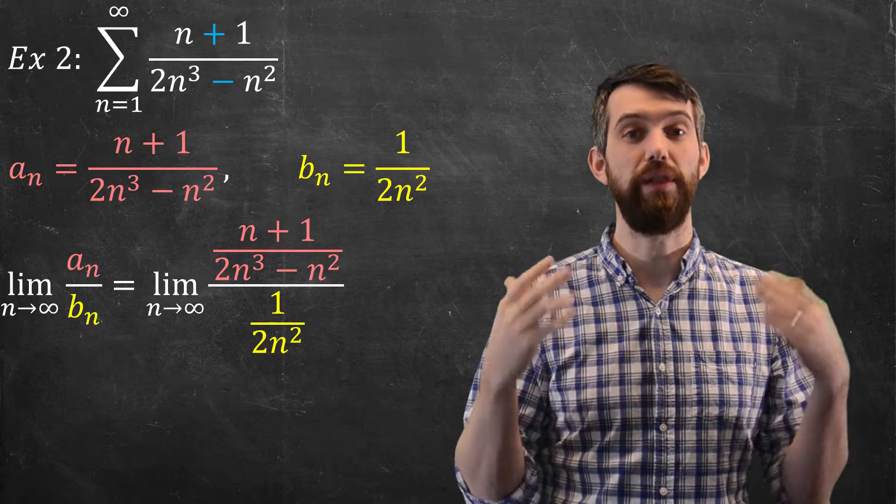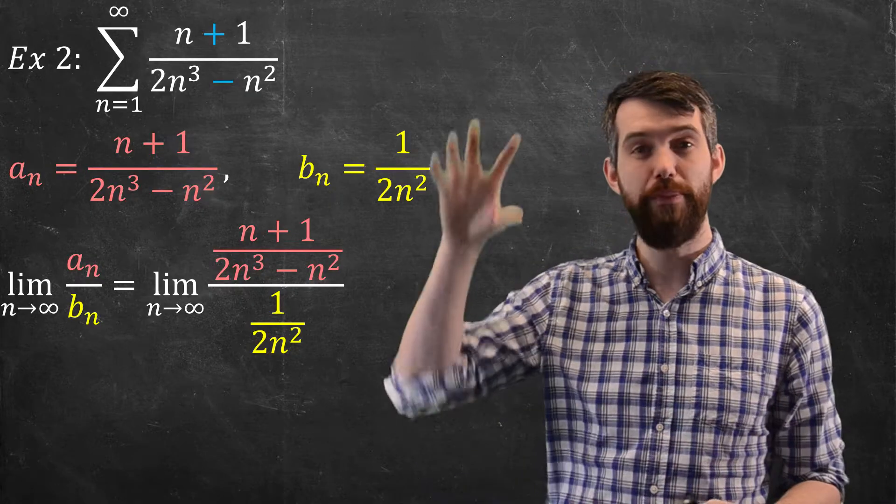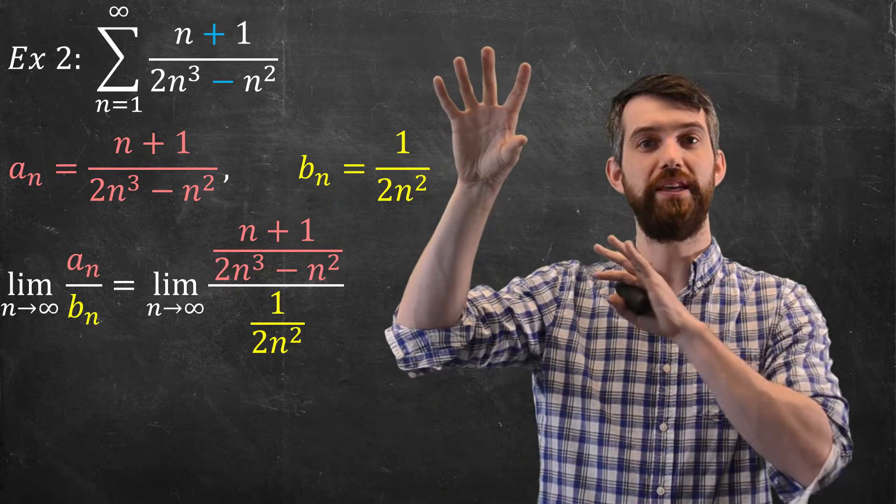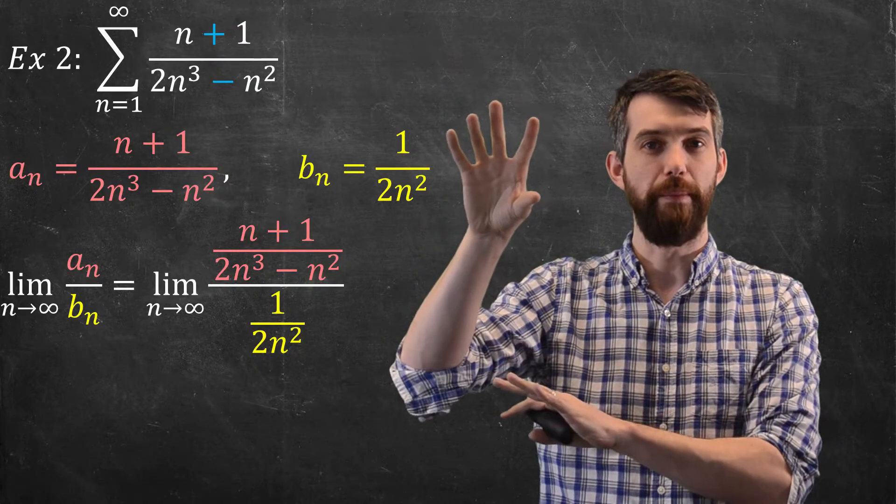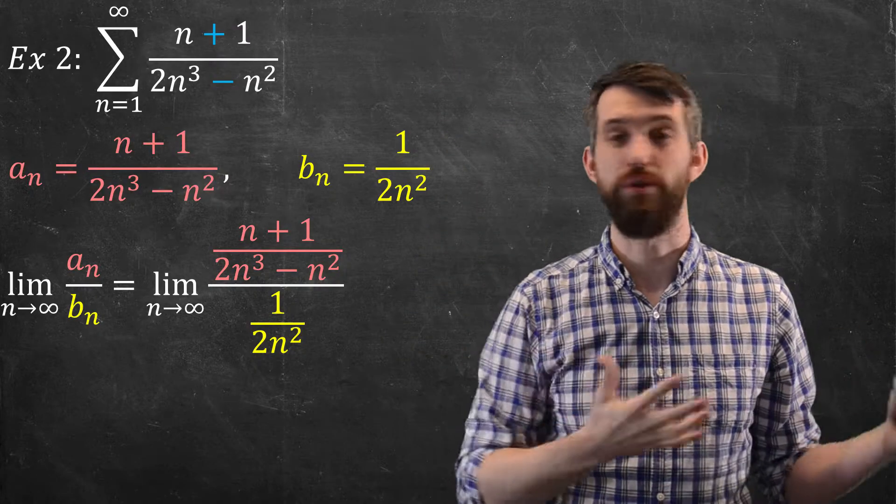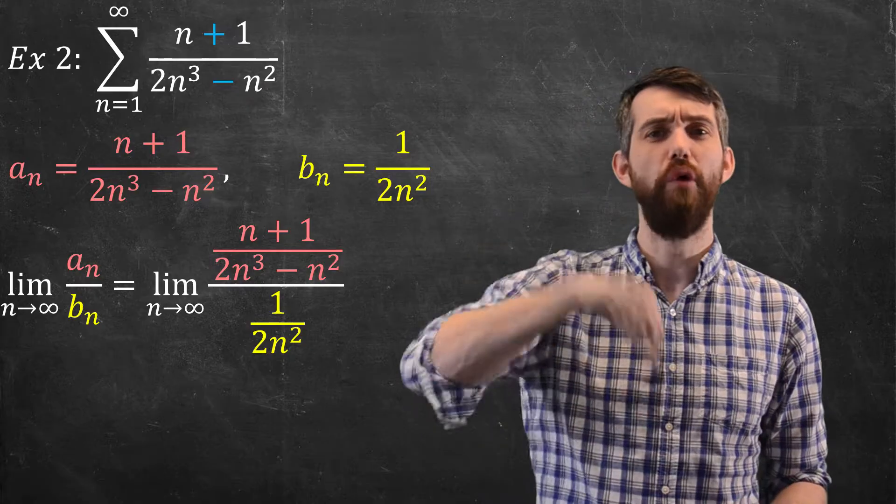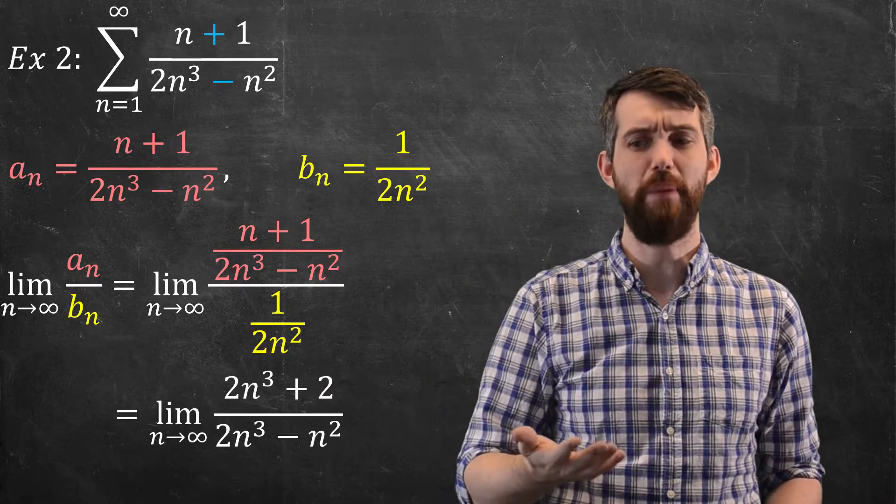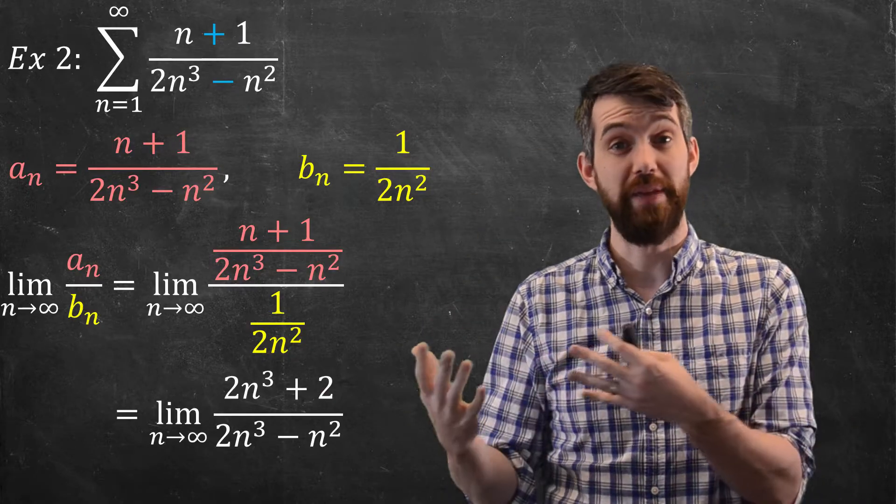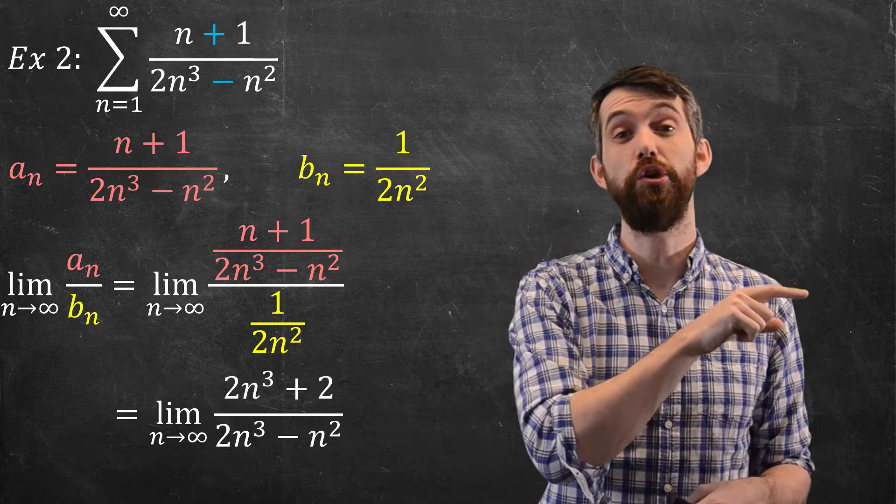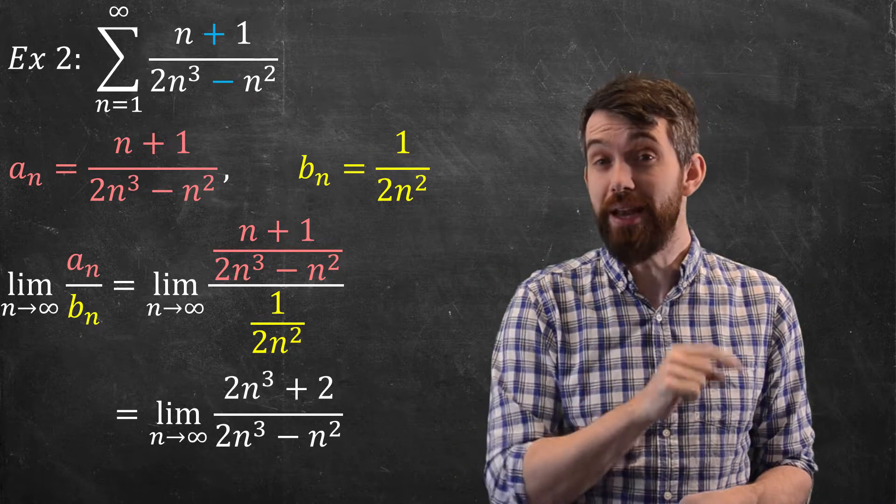That is, I'm going to consider the limit as n goes to infinity where I put the expression for the a_n on the top and the expression for the b_n on the bottom. Now, I can just do a little bit of algebra here. The 1 over n squared on the bottom, I'm going to bring it up to the top. This gives me a limit now of 2n^3 + 2 on the top and 2n^3 - n^2 on the bottom.